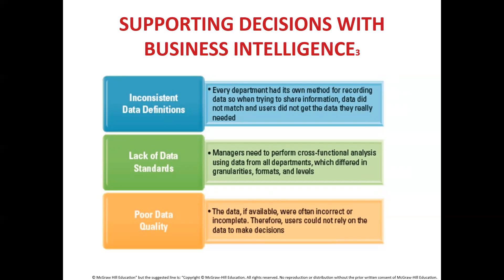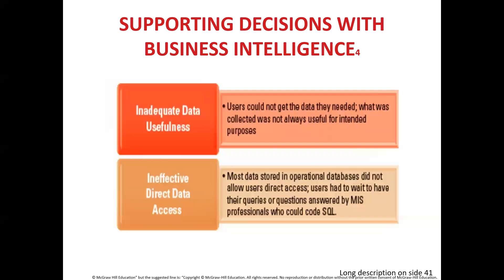Third, poor data quality — if available, data were often incorrect or incomplete, so users could not rely on the data to make decisions. Fourth, inadequate data usefulness — users could not get the data they needed; what was collected was not always useful for intended purposes. Fifth, ineffective direct data access — most data stored in operational databases did not allow users direct access; users had to wait to have their queries answered by MIS professionals who could code SQL.